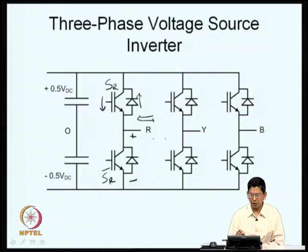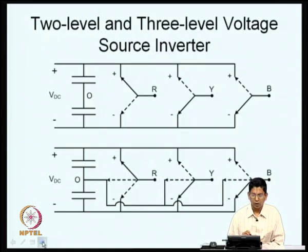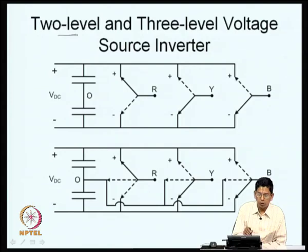Now, if we want the voltage between R and Y to also take values of plus or minus 0.5V_DC, we need a three-level voltage source inverter. A two-level inverter only gives plus V_DC, 0, or minus V_DC between phases. Moving to a three-level inverter is what we are going to look at now.